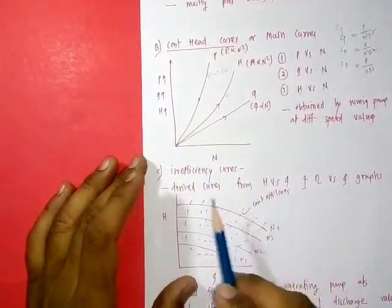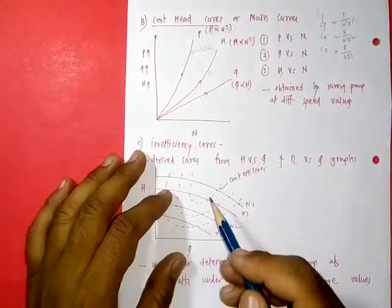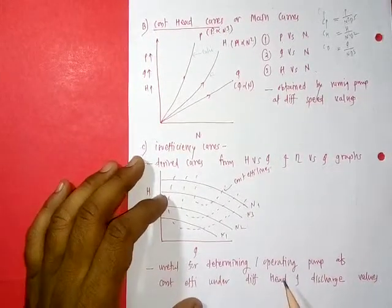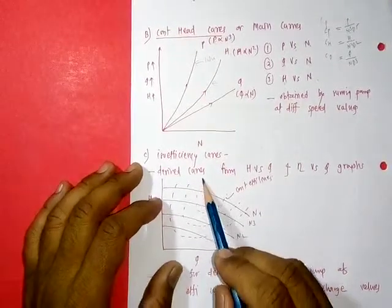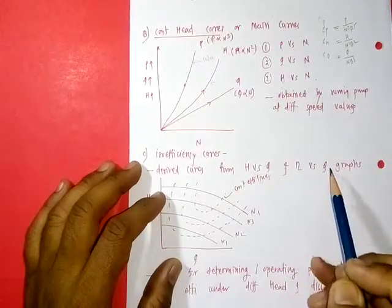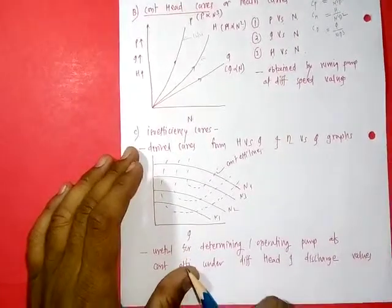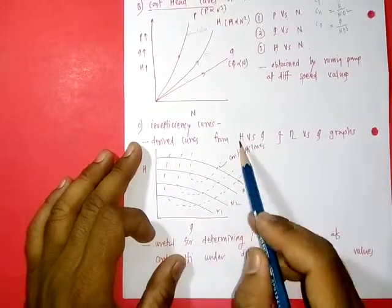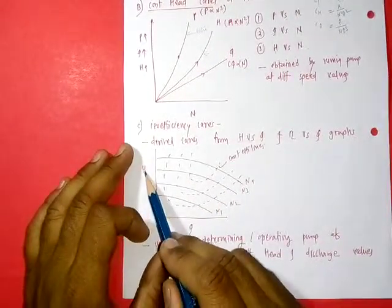The last type is isoefficiency curves, which are similar to curves in turbines. These curves are useful for determining or operating a pump at constant efficiencies under different head and discharge values. These curves are obtained or derived from curves of head versus discharge and efficiency versus discharge graphs.